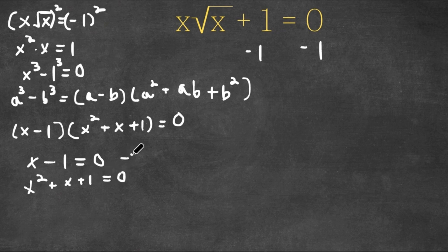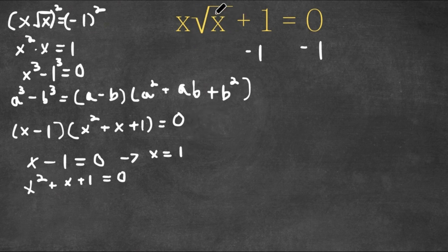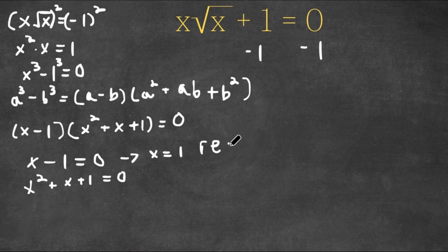For x minus 1 equals 0, this means that x is equal to 1. However, if we plug x equals 1 back in, we get 1 times the square root of 1, which is simply 1, plus 1 is equal to 0. Well, 1 plus 1 is 2, and 2 is not equal to 0. So this is actually rejected — it does not work.